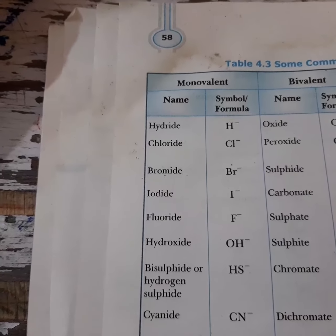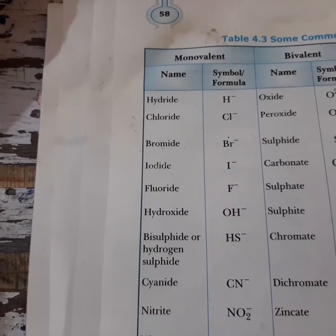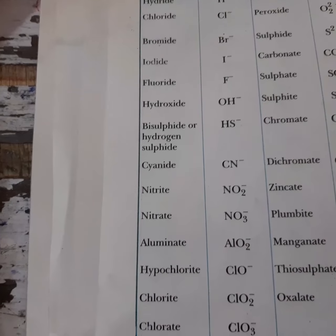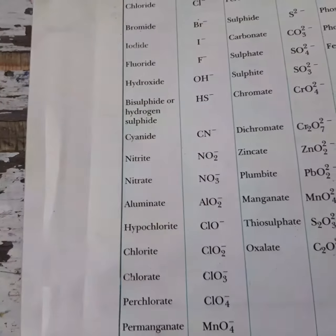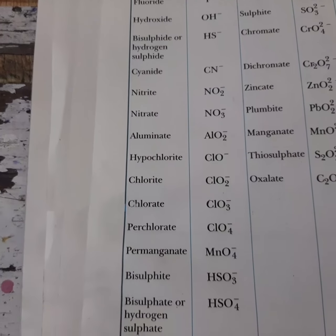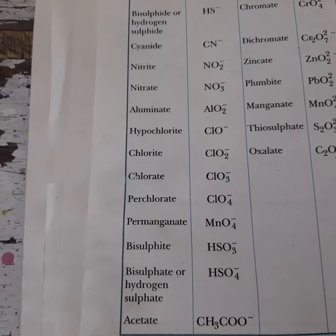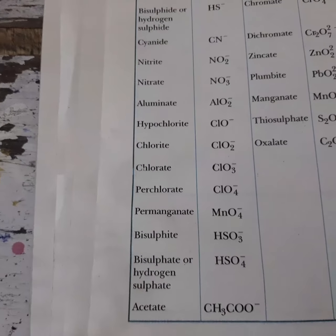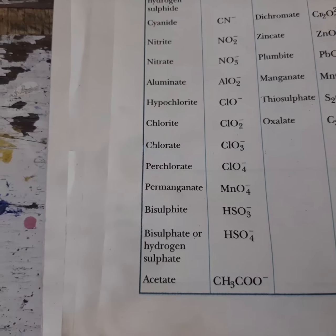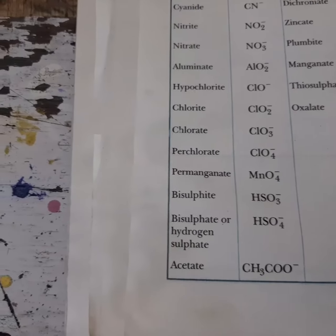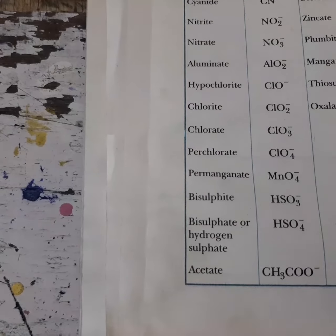Continuing the monovalent acidic radicals: hydroxide OH−, cyanide CN−, nitrite NO2−, nitrate NO3−, aluminate AlO2−, hypochlorite ClO−, chlorite ClO2−, chlorate ClO3−, perchlorate ClO4−, permanganate MnO4−, bisulfite HSO3−, also called hydrogen sulfite, and acetate CH3COO−. These are all monovalent acidic radicals.